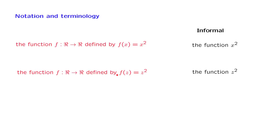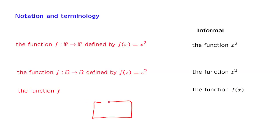Suppose we have already defined a function. Should we call it the function f or the function f(x)? When x is a number, f(x) is also a number, so f(x) is not really a function. The appropriate language is to talk about the function f, although quite often people will abuse language and use f(x). The idea is that we need to think of a function as some kind of box or computer program that takes inputs and produces outputs — there is a distinction between f, which is the box, and the value f(x) that the function takes when fed a specific argument.